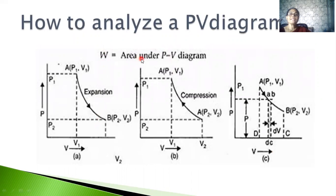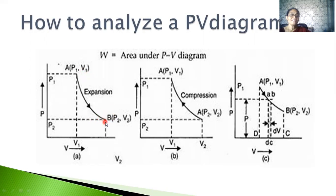Now we will see how to analyze a PV diagram. Suppose we are given a graph with volume on the x-axis and pressure on the y-axis. The initial state of the gas is represented by P1, V1 — where P1 is the initial pressure and V1 is the initial volume. The final state is represented by P2, V2. From this graph, we can find the initial and final states, and we can find the coordinates at any point on the graph.